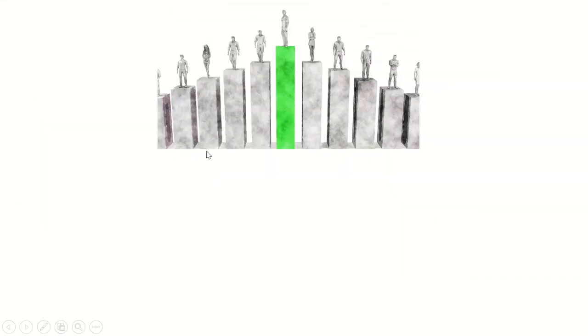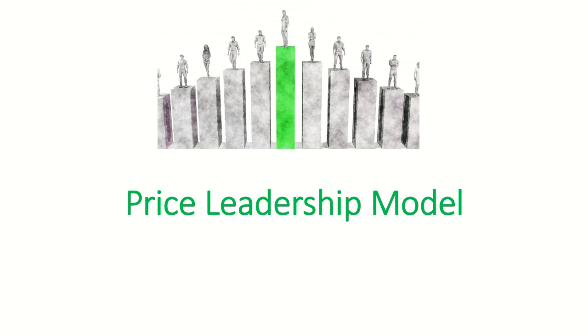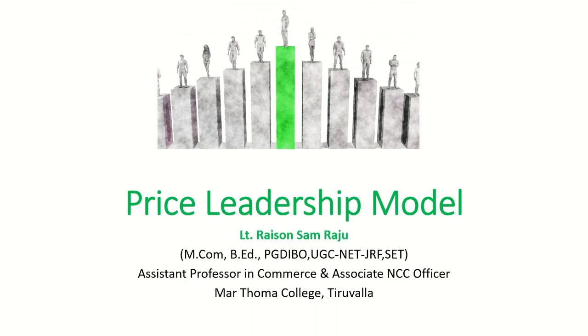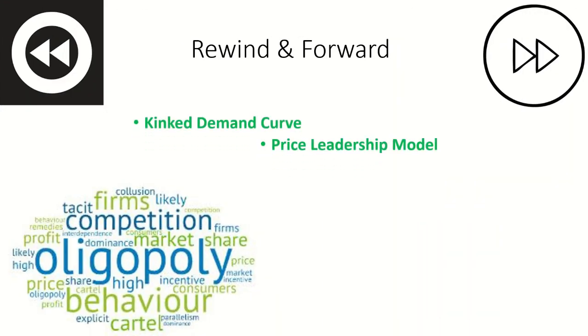Today we are going to discuss the next part in the price-output relationship of oligopoly, that is the price leadership model. In the last class we discussed the kinked demand curve. There are three approaches for determining price and output under oligopoly: the kinked demand curve, the price leadership model, and pricing under coalition. Today we will discuss the price leadership model and pricing under coalition.